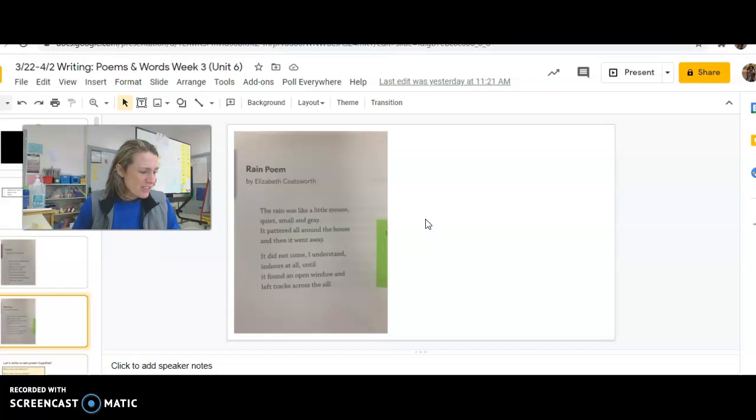So we have a word for this. We call these similes and metaphors. And you'll learn more about that when you get older. But it just means that you talk about something as if it is something else. So I want you to try to help me start to write a rain poem. And then your job is going to be to finish one. Okay?